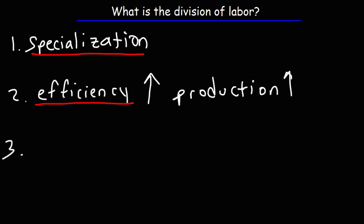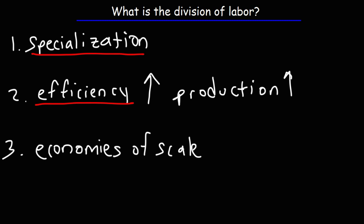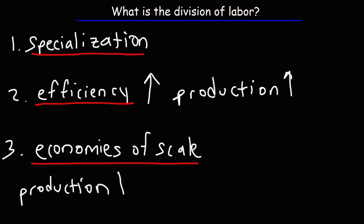Businesses that take advantage of specialization can also benefit from something called economies of scale. The idea behind this term is that as the production level increases, the average cost of making the good decreases. This allows a business to become highly profitable.